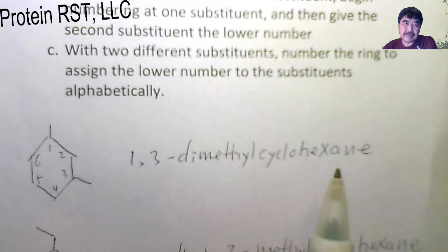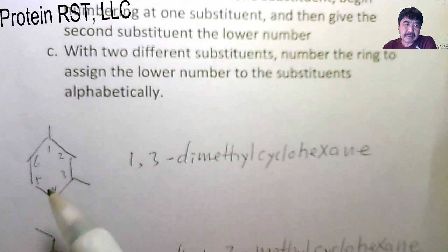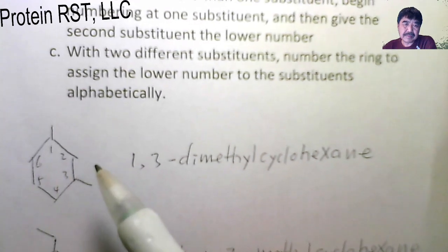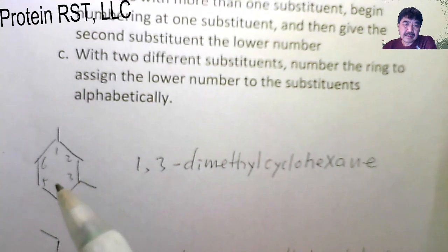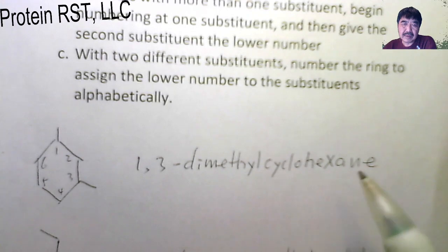Take a look at the examples. This is a cycloalkane. This ring has six carbons. At the C1 and C3, this ring has two substituents, methyl groups. So they are called 1,3-dimethyl cyclohexane.